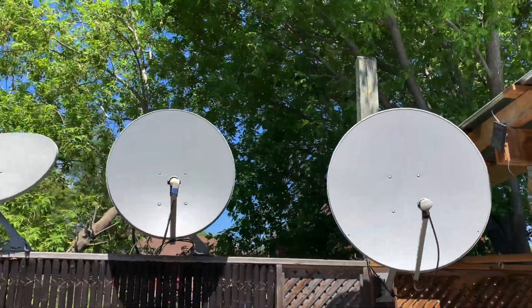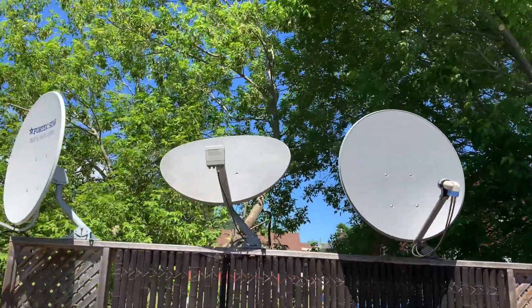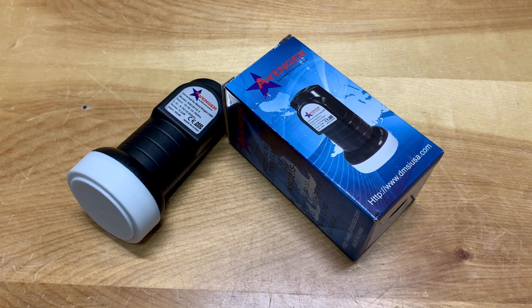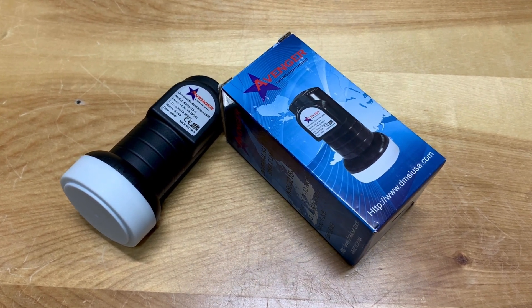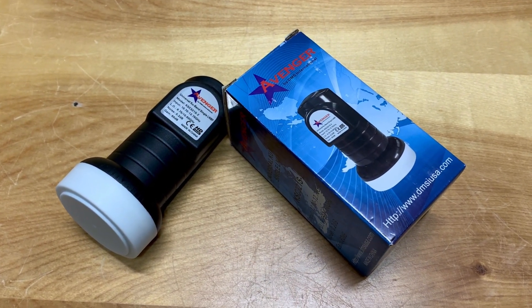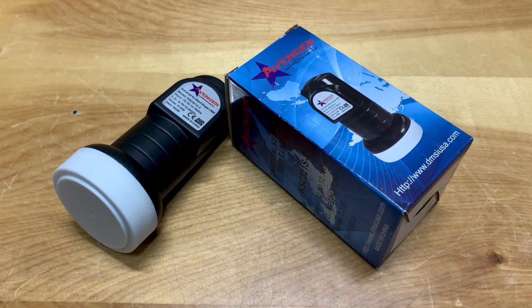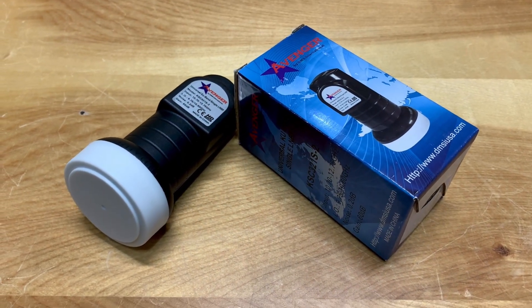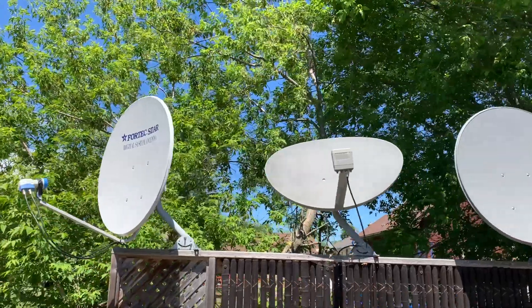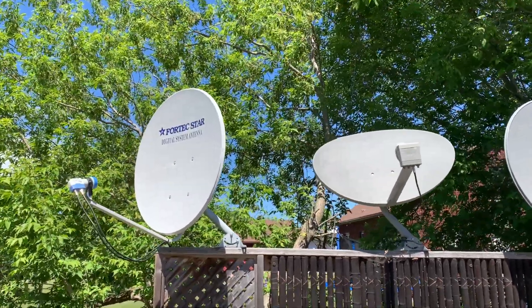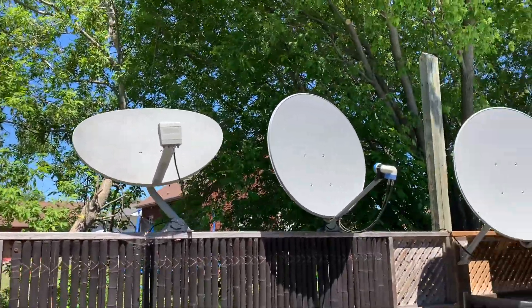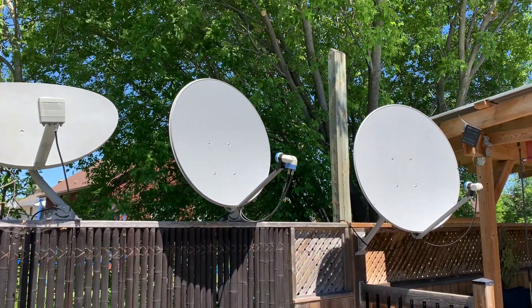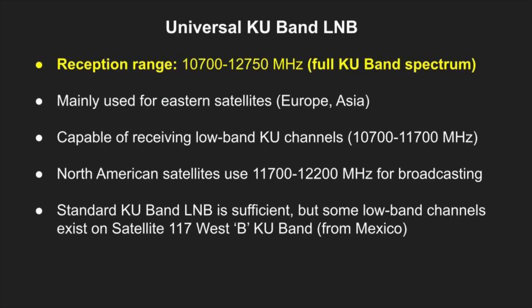Today we're going to talk about the universal KU-band satellite LNB. A universal LNB is one of two main types used in KU-band satellite reception — the universal as well as the standard KU-band LNB. A universal LNB is called that because it is usable anywhere in the world, as it receives the entire KU-band satellite frequency spectrum from 10,700 to 12,750 MHz.